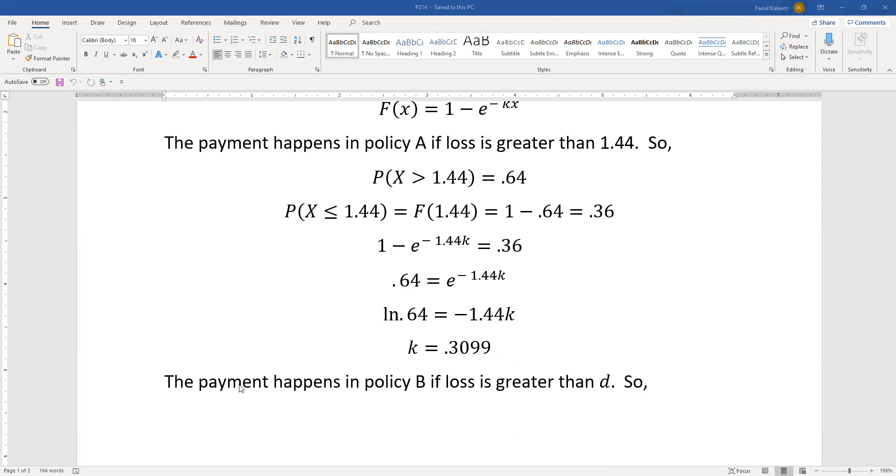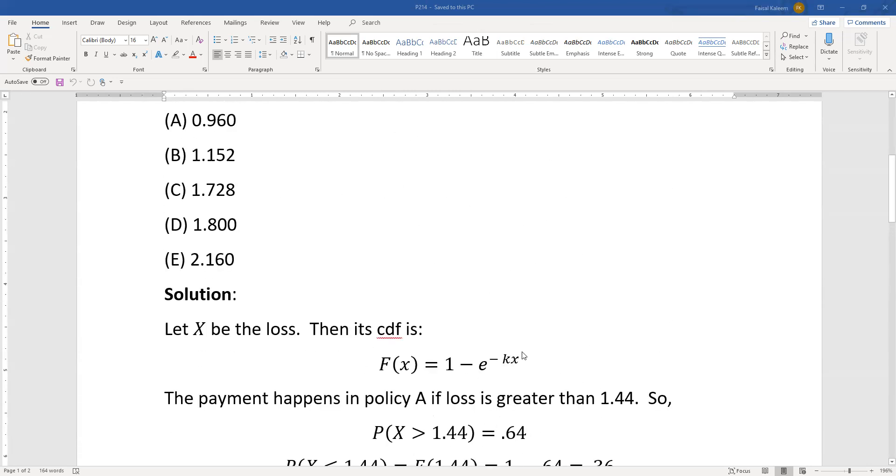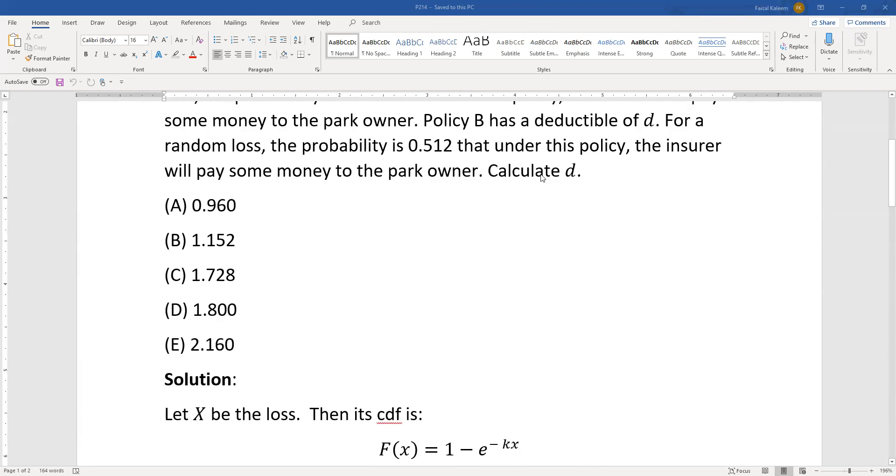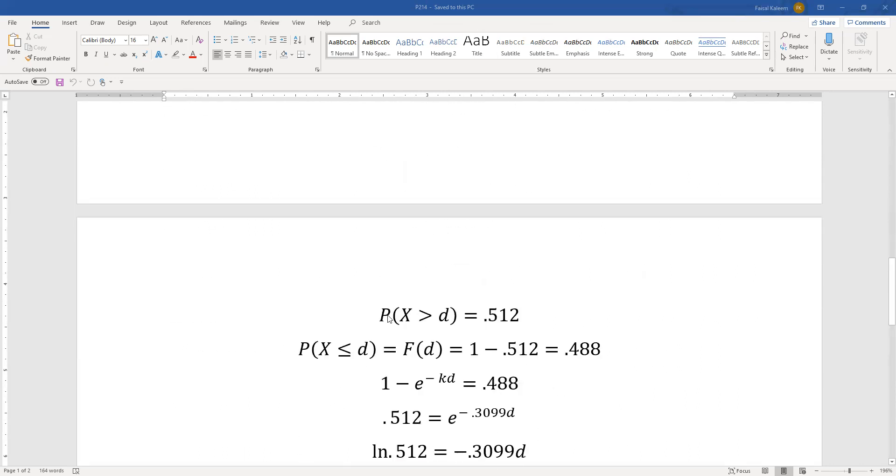Now, the payment for Policy B happens if the loss is greater than the deductible. We are not told what the deductible is—that's what we have to calculate. Again, we do the same thing. The probability that the loss is greater than the deductible in this case is 0.512, because they said that 0.512 is the probability that a payment will happen.